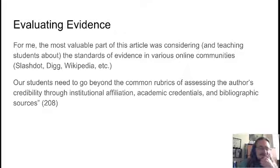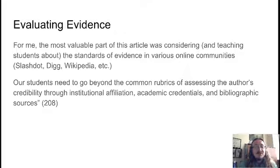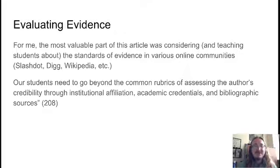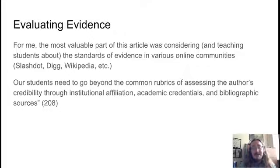Nevertheless, outside of academe, Slashdot in particular has a lot of respect among expert users. It's not like these sites are highly prone to error. They have all these built-in mechanisms — voting, polls, commenting, feedback — to make sure that poor content doesn't stay up there for long. And Wikipedia too has a lot of built-in error correction and vetting. A lot of people think Wikipedia is a free-for-all, but we know at this point it's actually pretty well vetted.